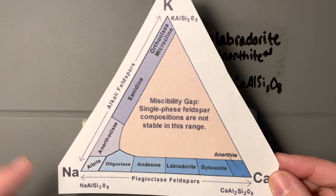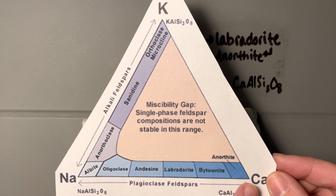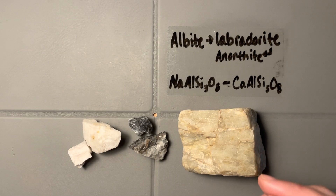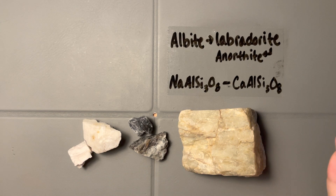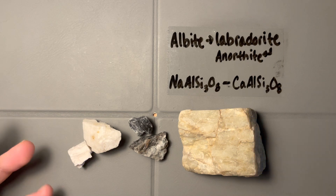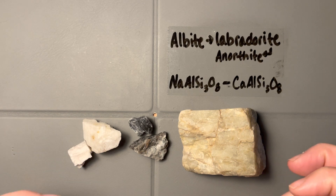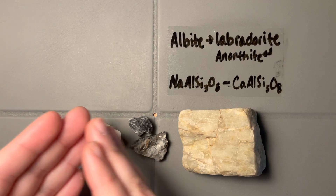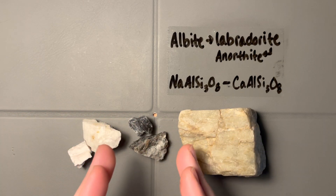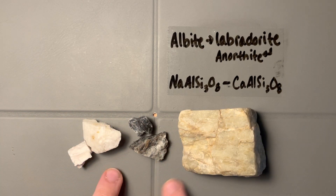So let's get started — we have albite here, labradorite here, and anorthite here, lined up just like that. Similarly to what we had with orthoclase and microcline, these samples are not necessarily the purest, because this is a solid solution series. We're constantly moving from one end to another with compositions in between, but I've tried to pick out samples that are really exemplary of each group.